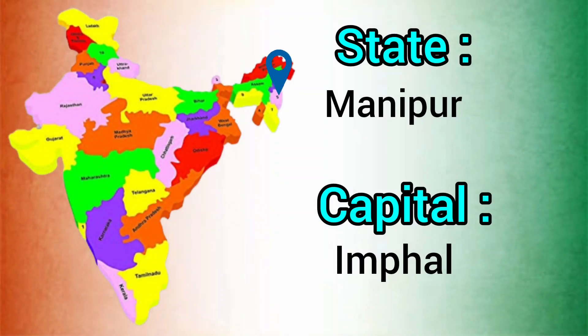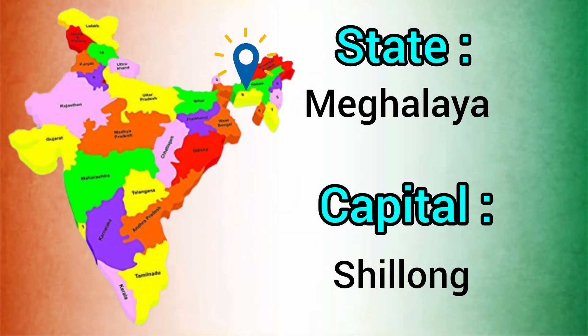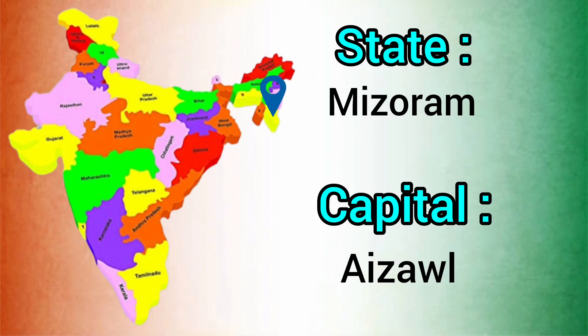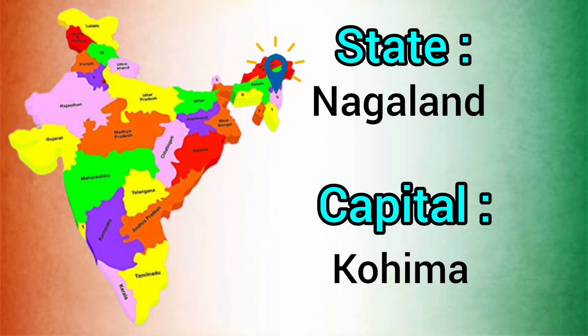State: Manipur. Capital: Imphal. State: Meghalaya. Capital: Shillong. State: Mizoram. Capital: Aizawl. State: Nagaland. Capital: Kohima.